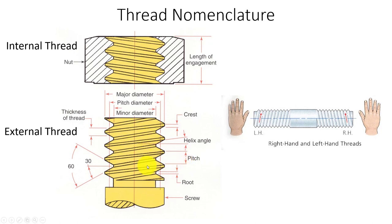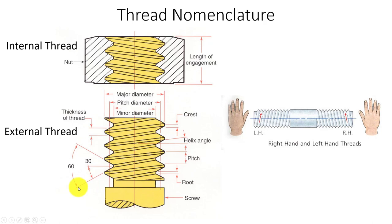TPI is how many threads repeat for one unit. Here's our major diameter - we can check that. And we're dealing with 60-degree threads included angle.